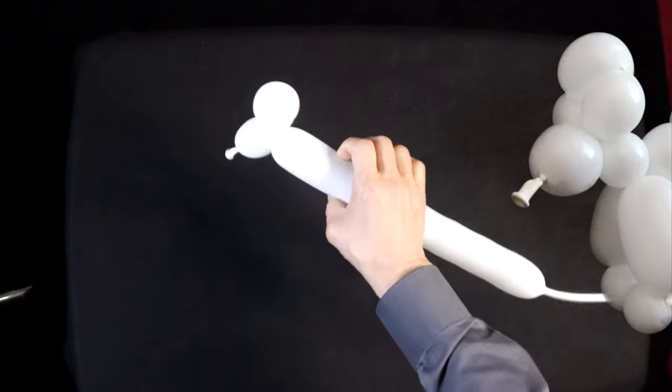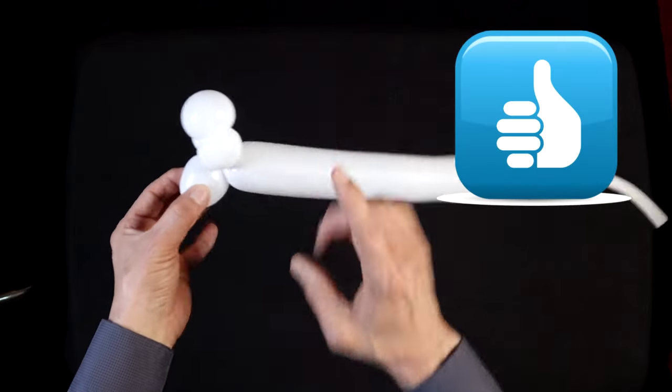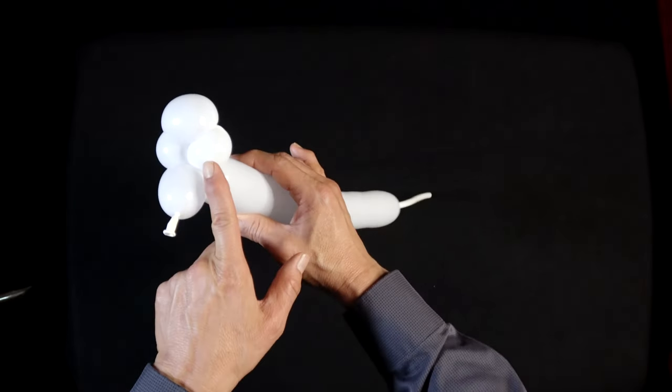And you have the head of your poodle. Let's make a small neck. This will be a very small twist, probably matching the one here.